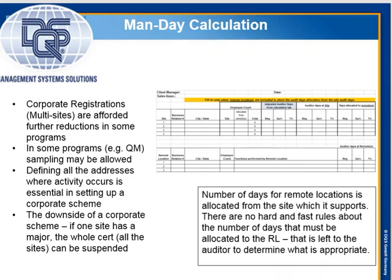Corporate registrations are afforded further reductions in some programs due to commonality in the quality management system. In some programs, you may actually be able to do site or remote location sampling. Defining all the addresses where activity occurs is essential in setting up a corporate scheme. One note of caution: if you are setting up a corporate scheme with a client, it has one major downside — if one site fails, the whole certificate can be suspended. You cannot separate out that one site from the certificate.